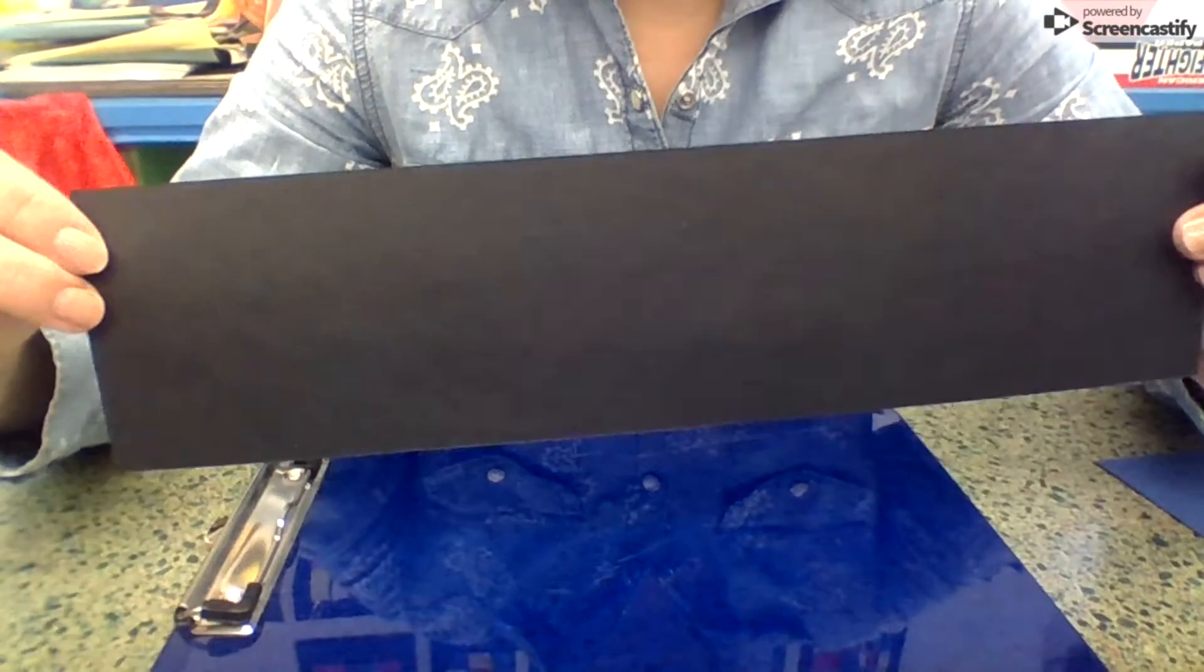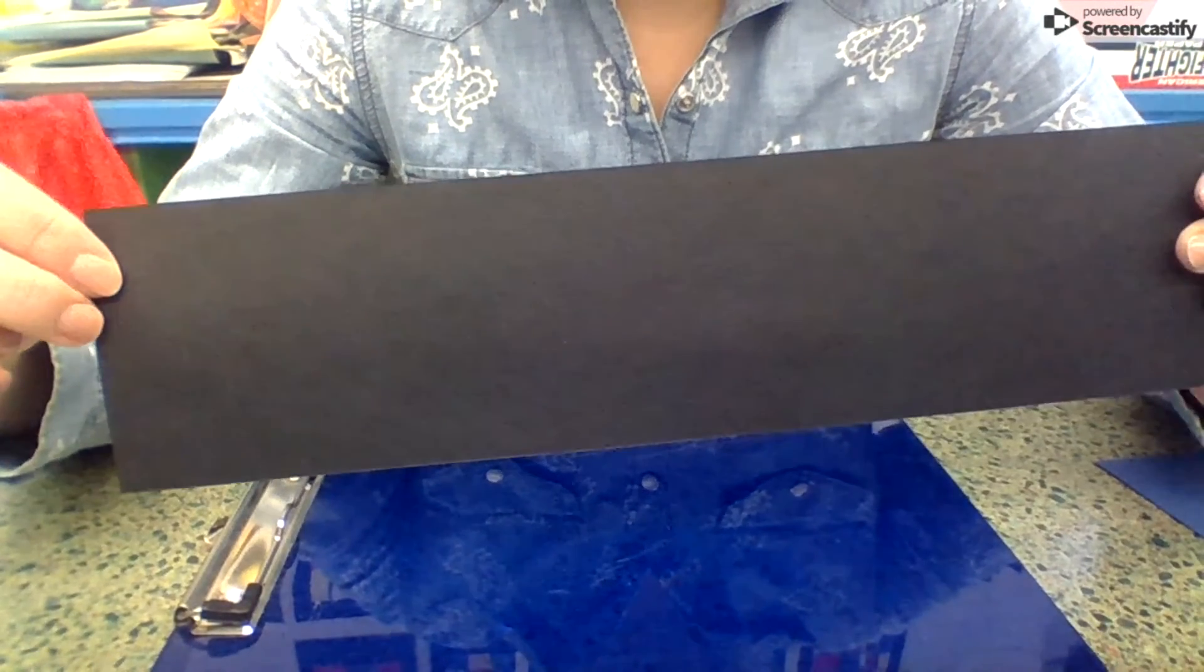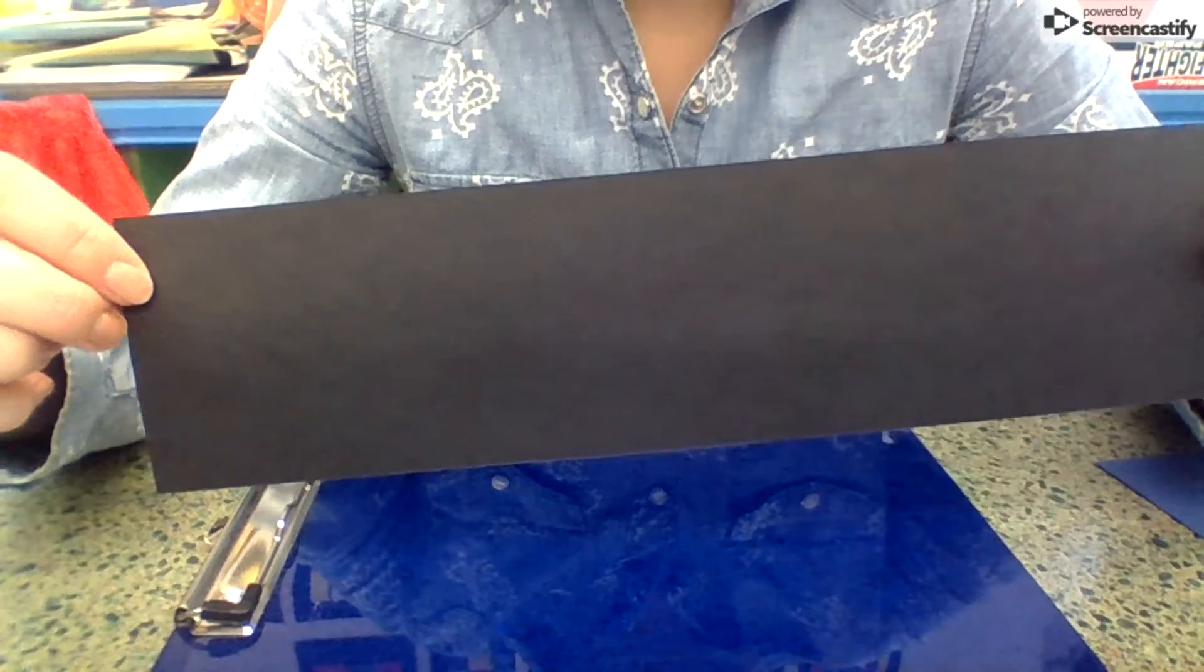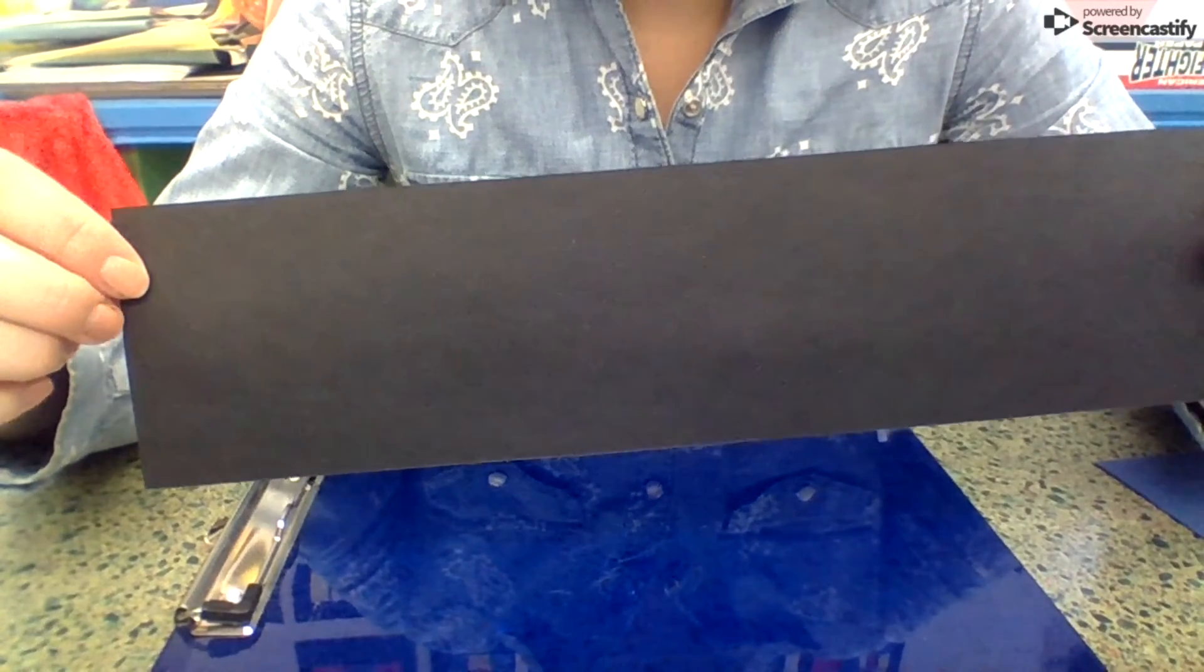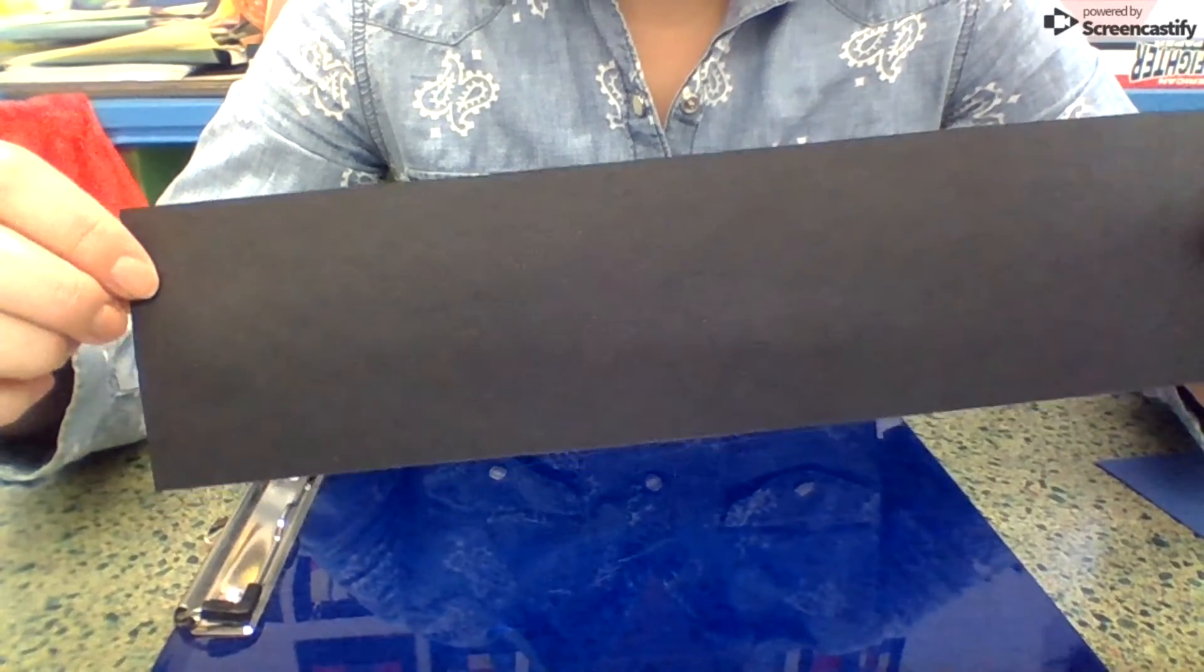Everyone's going to get one long piece of black paper to create our landscape on. We're going to add details like mountains and trees, but it's all going to be in black because it's going to be the silhouette.